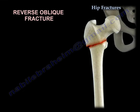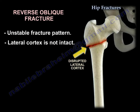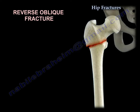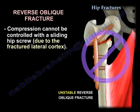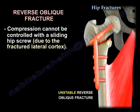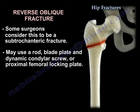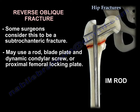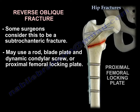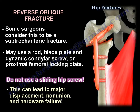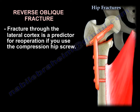The reverse oblique fracture is an unstable pattern where the lateral cortex is not intact. You cannot control compression with a sliding hip screw because the fractured lateral cortex will not support it and the fracture will slide. Some consider it a subtrochanteric fracture. Treatment options include a rod, blade plate, dynamic condylar screw, or proximal femoral locking plate. Do not use a sliding hip screw, as it can lead to major displacement, non-union, and hardware failure. Fracture through the lateral cortex is a predictor of failure if a compression hip screw is used.